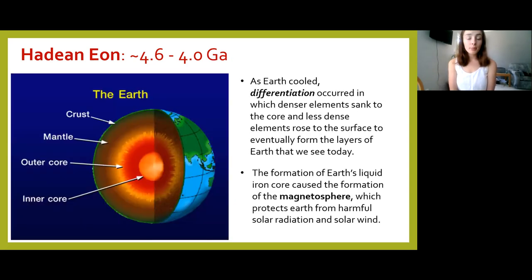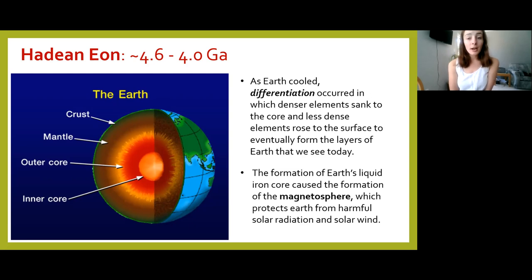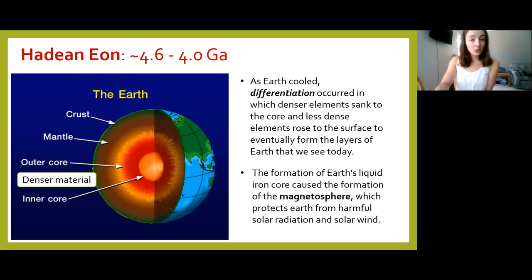As Earth cooled, it went through a process called differentiation. Once bombardment started to slow down, gravitational compression started waning, and radioactive decay slowed as well, Earth began to cool down — but slowly enough for differentiation to occur. This is basically the formation of Earth's interior layers: the denser elements sank to Earth's core, while less dense elements rose to the surface, forming the heavy dense iron core and the lighter silicate-rich upper mantle and crust.